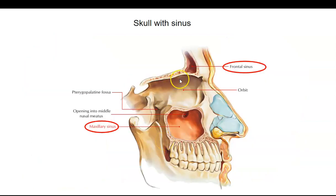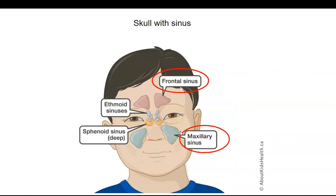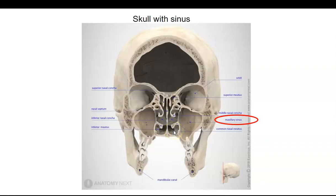Here's another sagittal view showing the frontal sinus and the maxillary sinus. The upper jaw has been cut away. Frontal sinus again, and maxillary sinus. Here's a great picture of a real skull that's been cut along the frontal or coronal plane, and you can see the maxillary sinus very well.